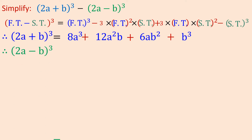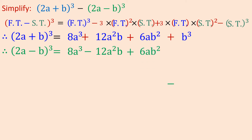Now let us look at (2a - b)³. It will give the same structure, but the signs will change: 8a³ minus 12a²b plus 6ab² minus b³. So we know both results and can now substitute and simplify.